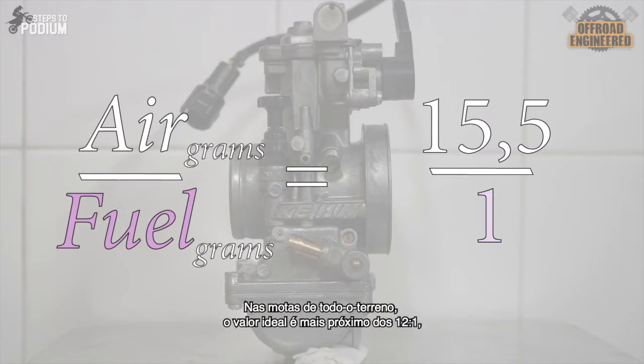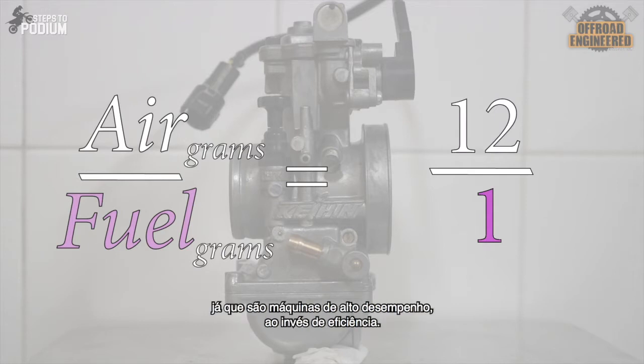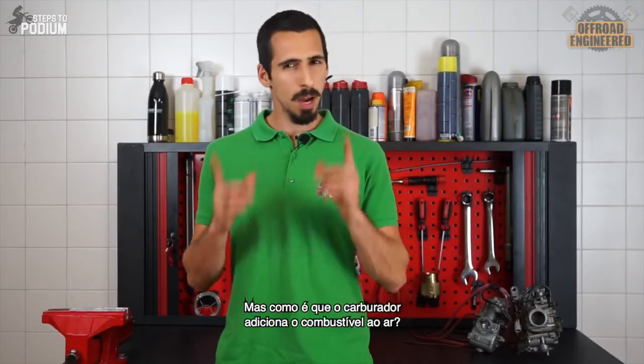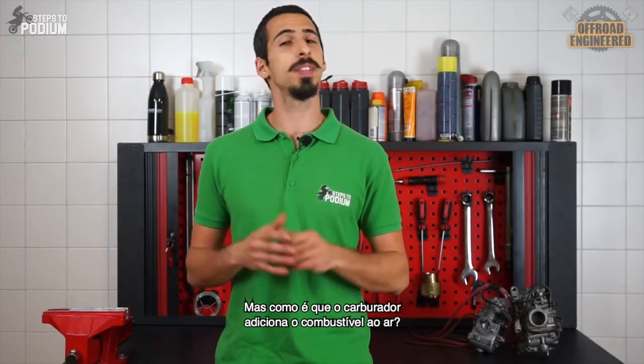However, in dirt bikes the ideal air-fuel ratio is closer to 12 to 1, since dirt bikes are performance-oriented machines rather than the epitome of efficiency. But how exactly does a carburetor mix air and fuel?